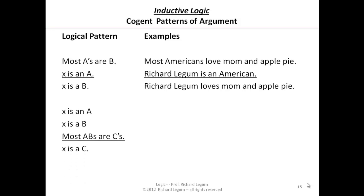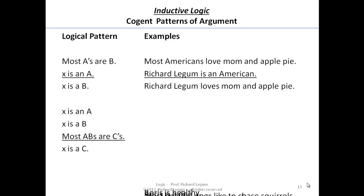And here's another common pattern that we're going to see that's interesting when we look at inductive arguments. We're going to say X is an A, X is a B, most AB's, that is most things that are A and B, are C's, therefore X is a C. And let's look at an example.